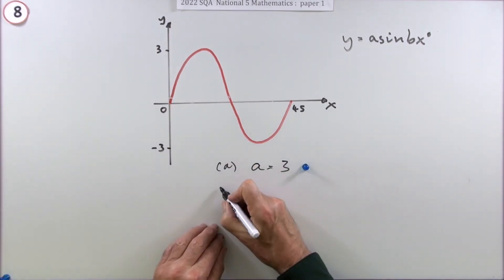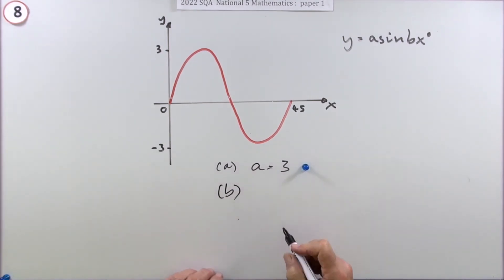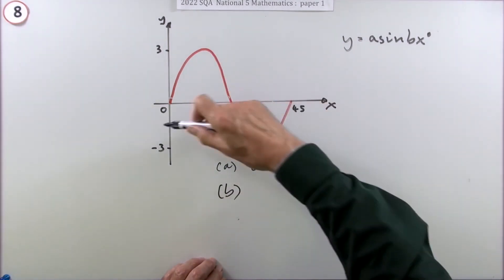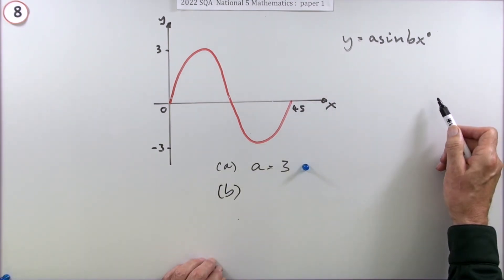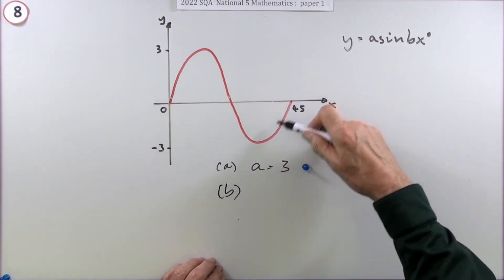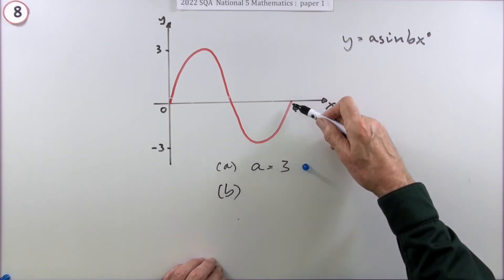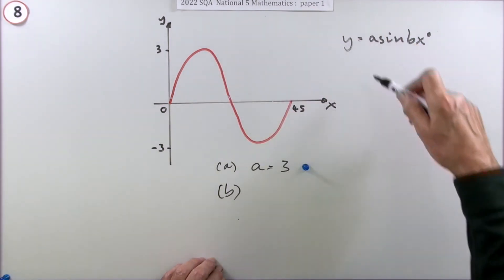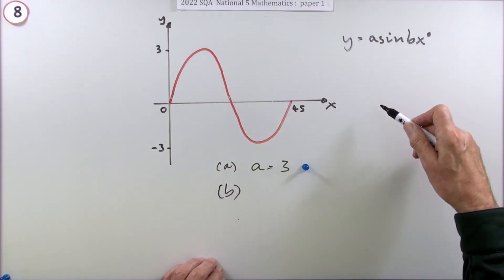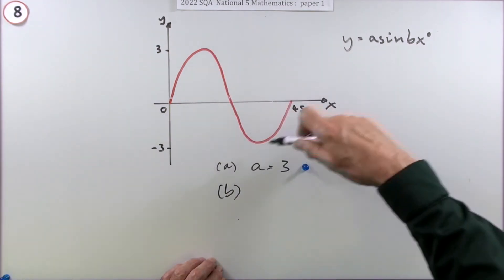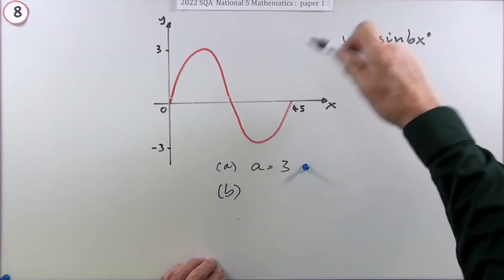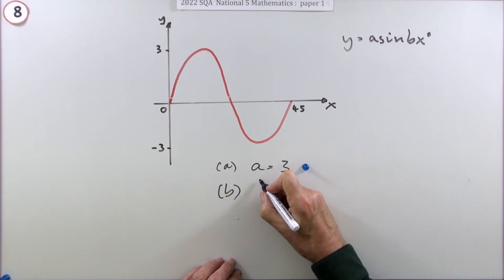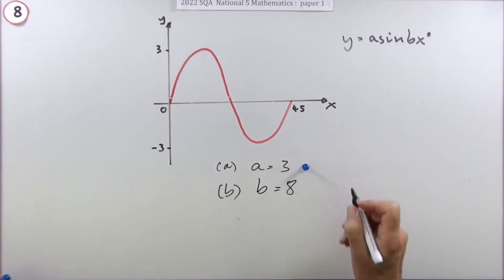B - well, there should be one of these wavelengths by 360. You've got one of them, it's completed one cycle by 45. That'd have been two by 90, and there's four 90s in 360, so that's eight of these. So you're getting eight of these, which means the frequency is eight. That gets a mark.